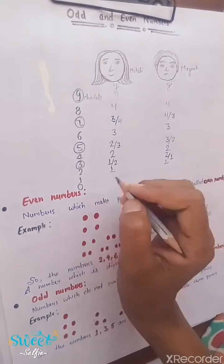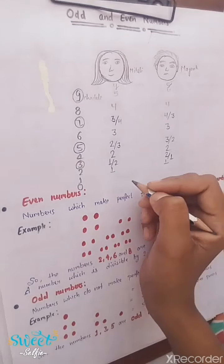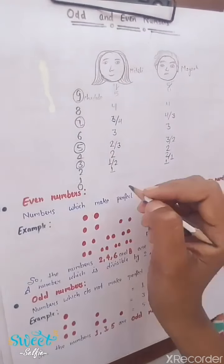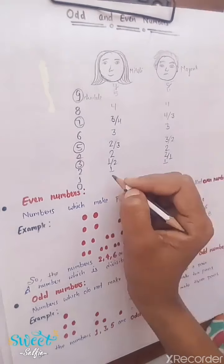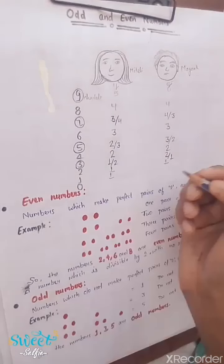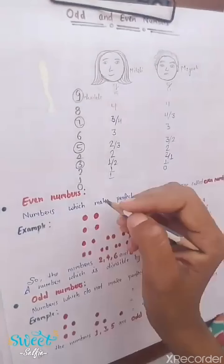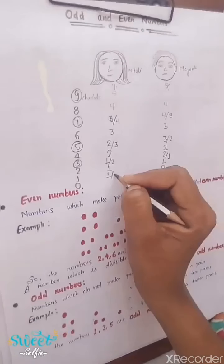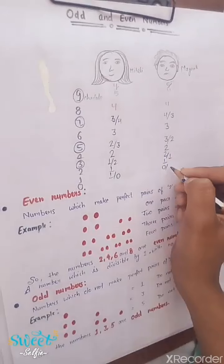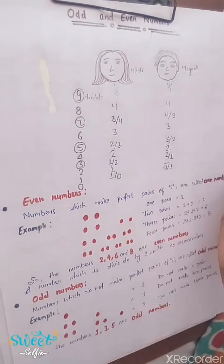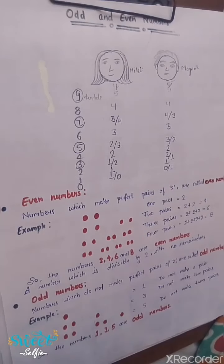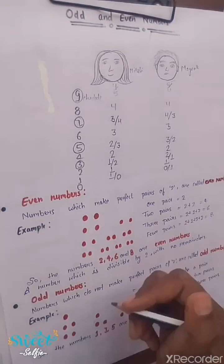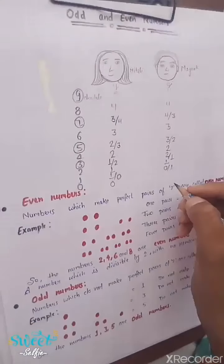If I have one chocolate, can I distribute equally between Mayank and Mitali? No, because there is only one chocolate. If I give it to Mitali, there is nothing for Mayank. If I have zero chocolates, then I can give zero to Mitali and zero to Mayank — that is equal.